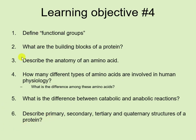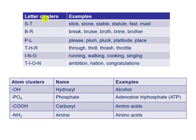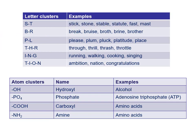Let's start off with the idea of functional groups. When you look at letters of the alphabet — in the English alphabet we have 26 letters — certain letters like to be clustered together, like ST: stick, stone, stable, statue, fast, mast. BR — you can see a whole bunch of words that show that functional group BR. T-I-O-N: there's a gazillion words that end in T-I-O-N — ambition, nation, congratulations. These are just examples.